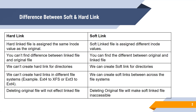We cannot create hard links across different file systems. For example, if you want to create a hard link from a source file to a destination file, they must be on the same file system. If your source file system is ext4 and the destination is XFS, you cannot create it — or ext3 to ext4 or vice versa won't work either. However, you can create soft links across file systems — for example, source ext4 to destination XFS, or source ext3 to destination ext4.